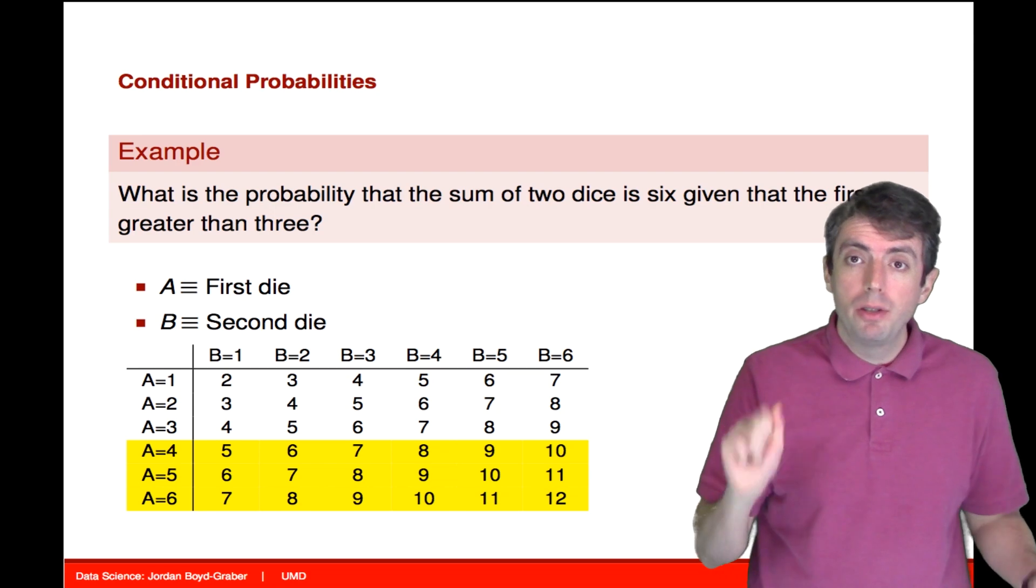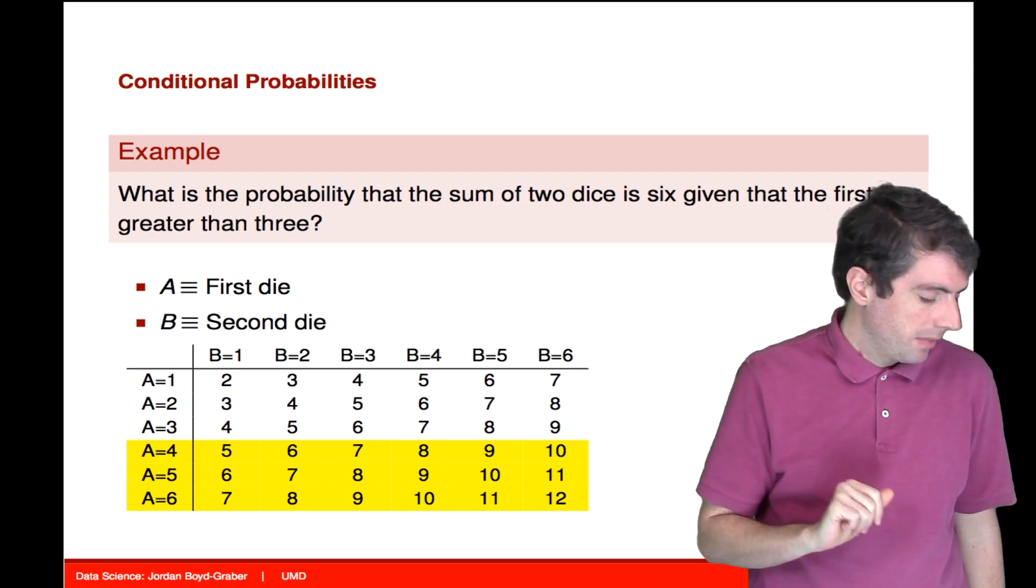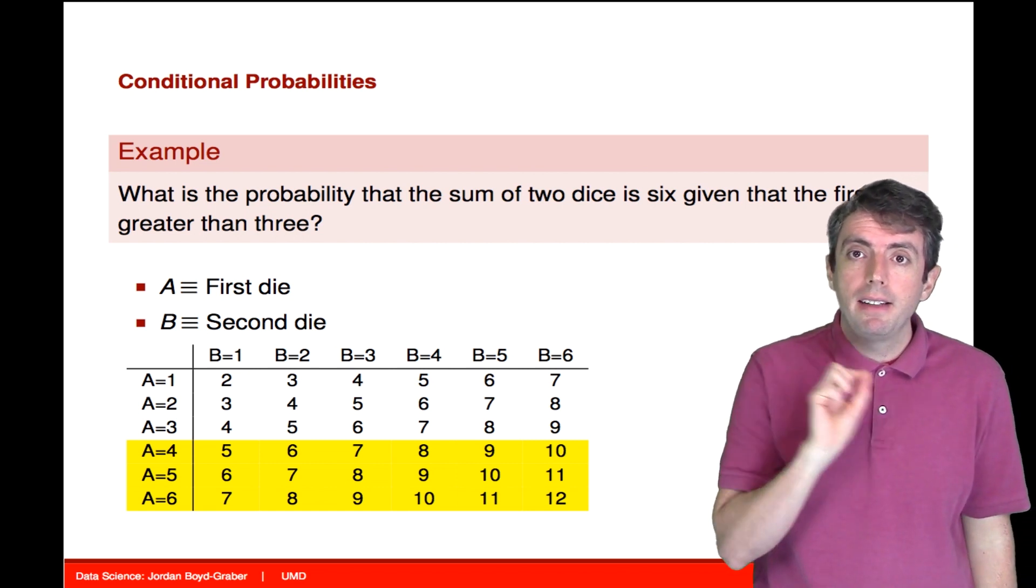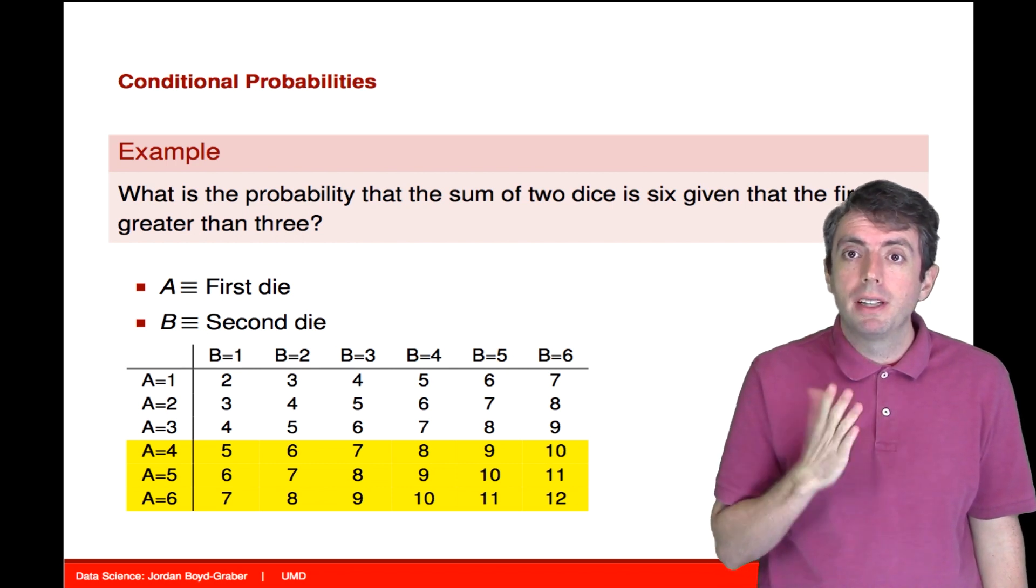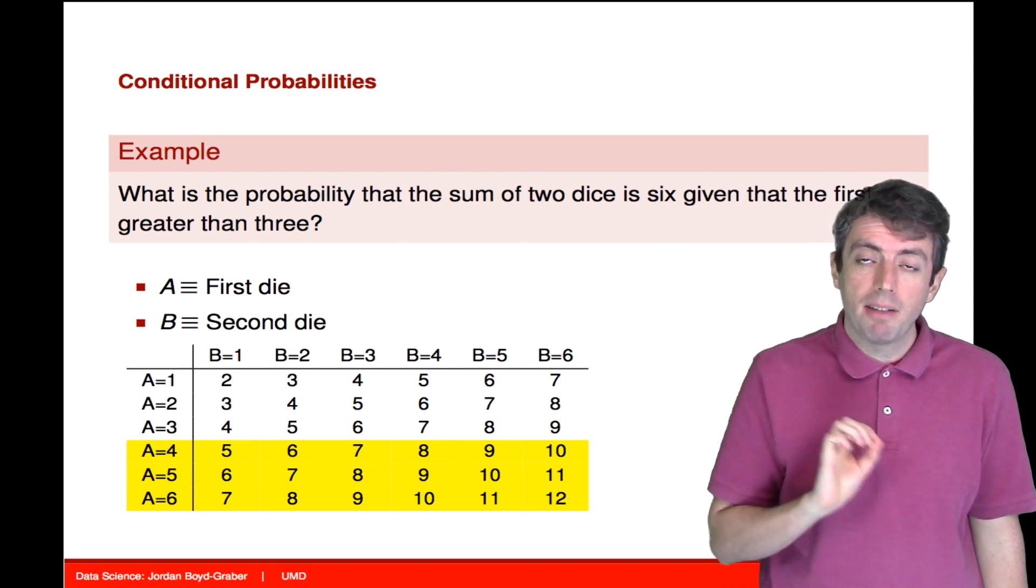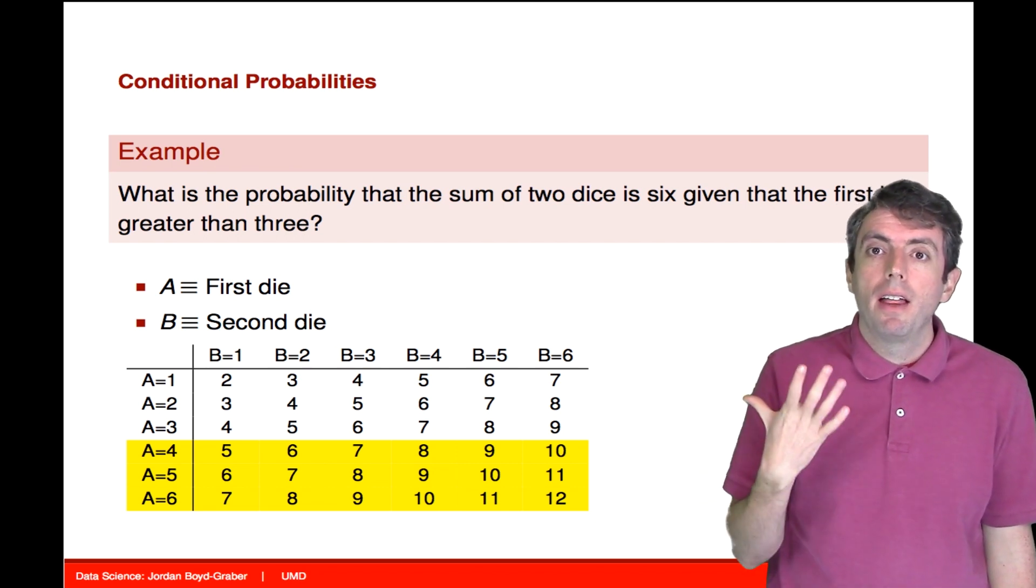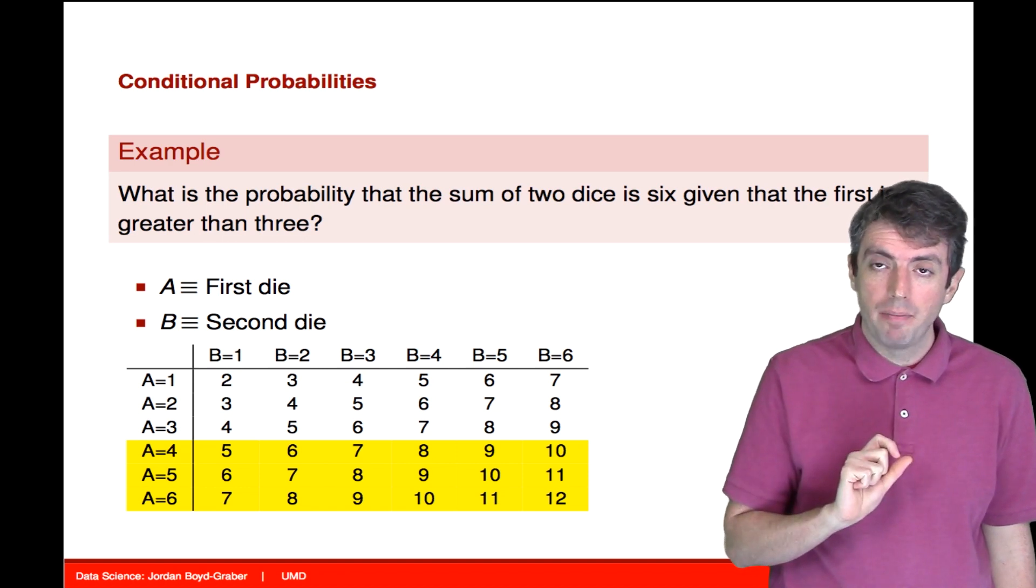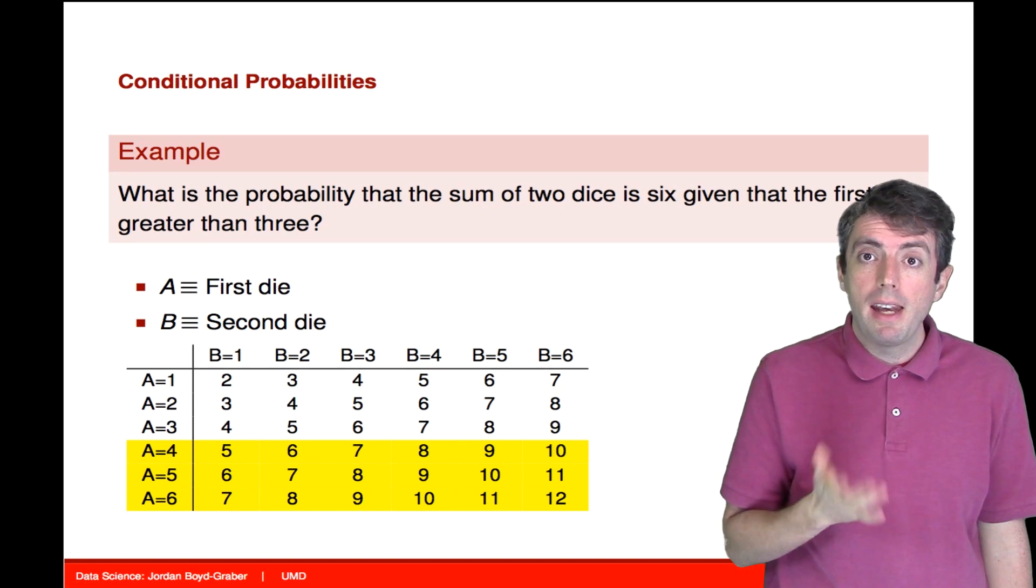So let's call our two variables A and B. A is the first die, B is the second die. So we can write this as a six-by-six grid, and each point in the grid is equally probable. In this case, they each have probability 1 over 36. I've highlighted in yellow the event that the first die is greater than three. That means that it was either four, five, or six.